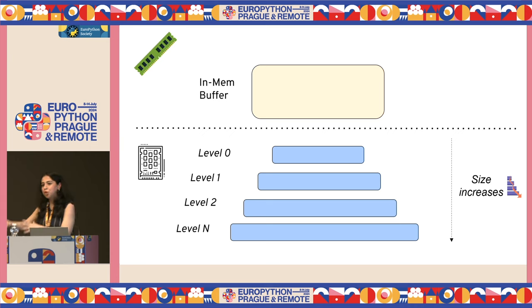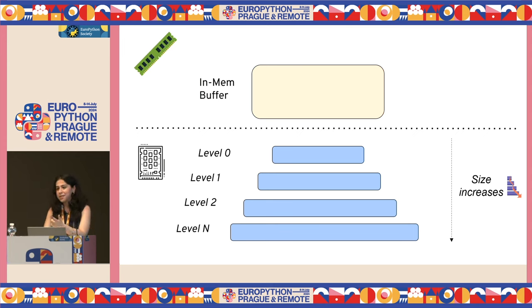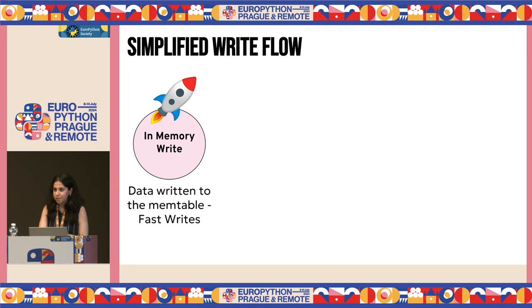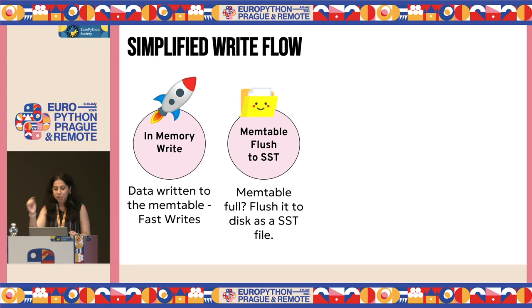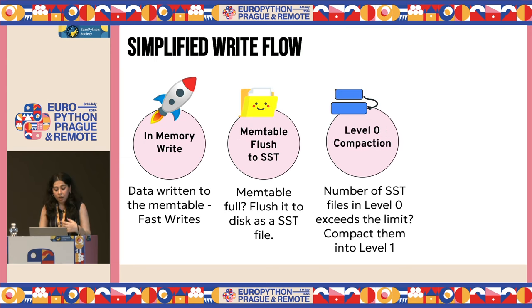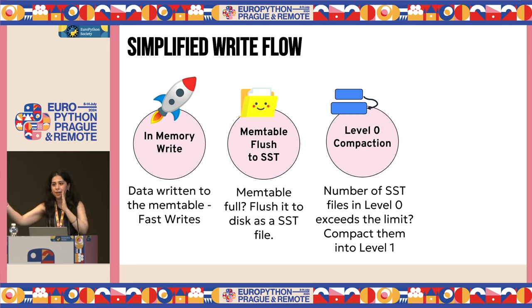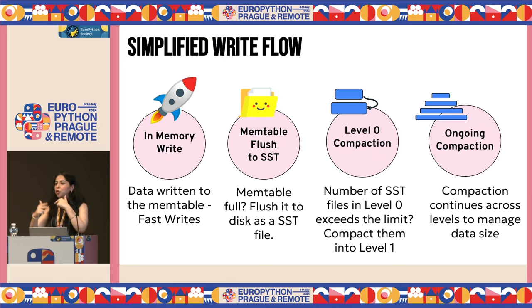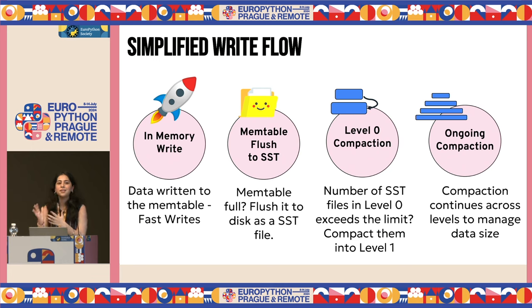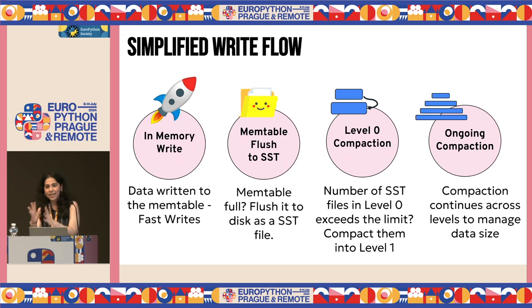Let me summarize the write flow. First, you write to the in-memory buffer really fast — it's just a write to RAM. Once the memtable is full, you flush it to disk as an SST file. As the number of SST files in level zero increases, RocksDB triggers compaction, merges these SST files, and once level zero hits its size limit, it's shifted to level one. This ongoing compaction keeps happening between level zero and level one, level one and level two. This is how RocksDB manages data size and optimizes read performance.